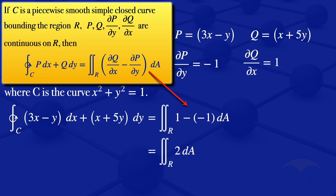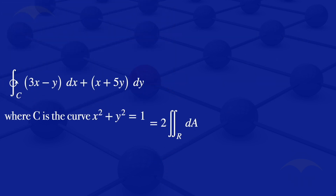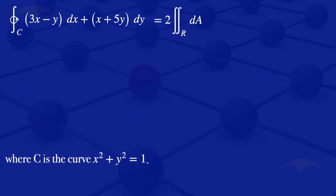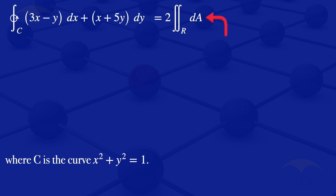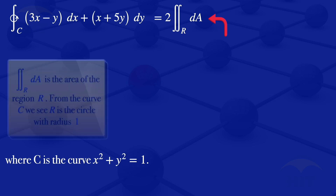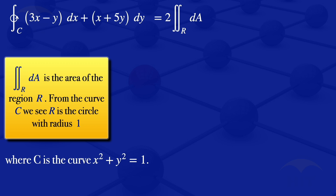Since 2 is a constant, we can factor it out so that we have 2 multiplied by the double integral over the region R dA. Now, the double integral over the region R dA is the area of the region R. From the curve C that we are given, x squared plus y squared equals 1, this is a circle centered at the origin with radius 1.